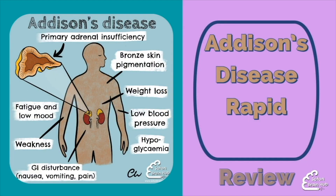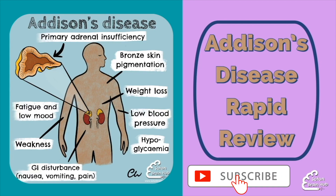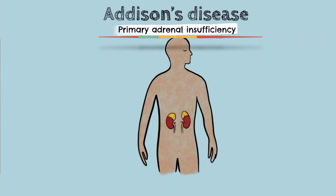Hello, I'm James and welcome to another Sutton Brain Hub rapid review of Addison's disease. Addison's disease, also known as primary adrenal insufficiency, is caused by destruction of the adrenal cortex. In 80% of cases this is due to autoimmune destruction, but in developing countries tuberculosis is a common cause. Destruction of the adrenal cortex results in a deficiency of the steroid hormones it produces, leading to a constellation of clinical symptoms.